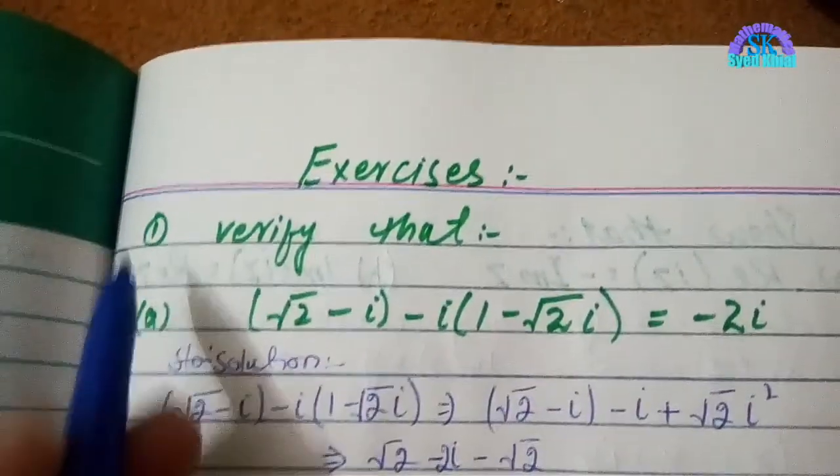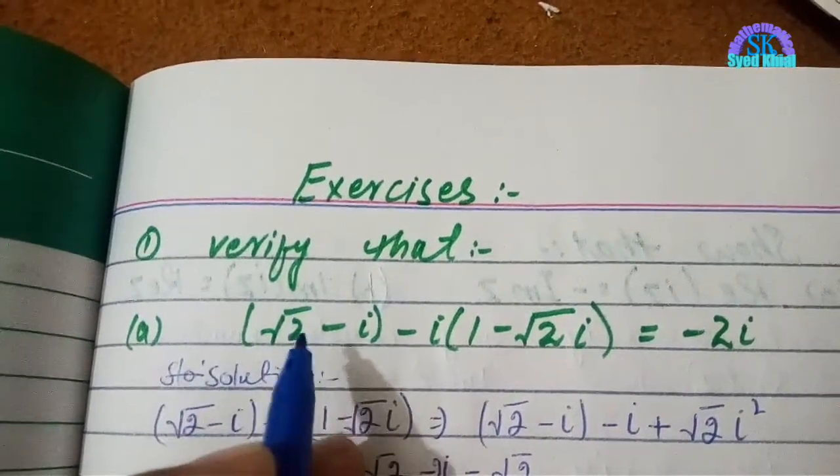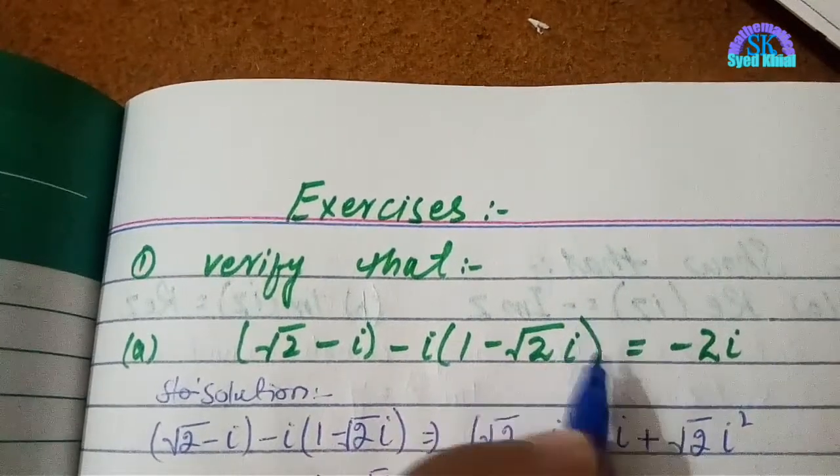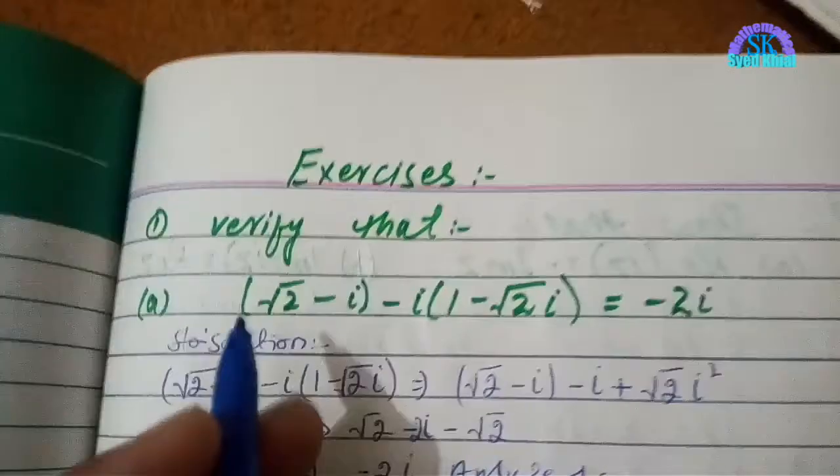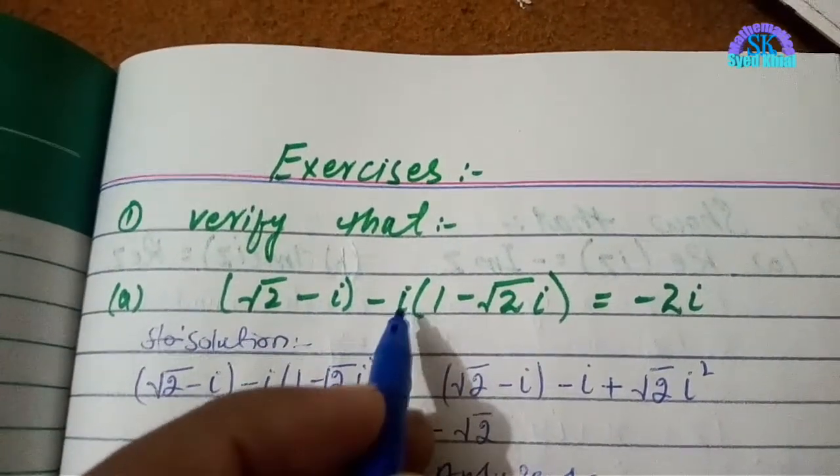Exercise 1, question number 1. Verify that (√2 - i)(1 - √2i) = -2i. If we prove it, verify it, then we will multiply it. We will multiply it.